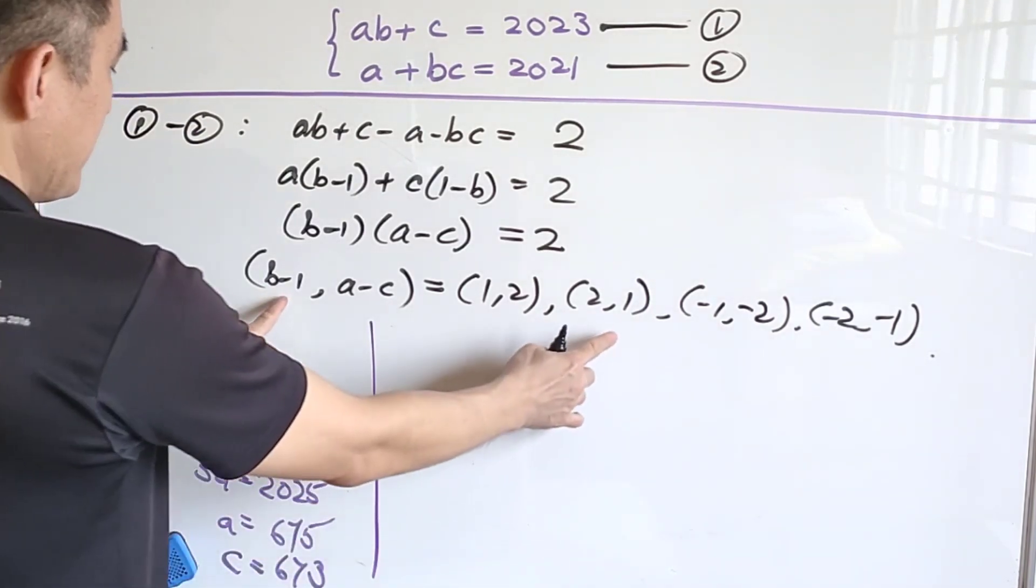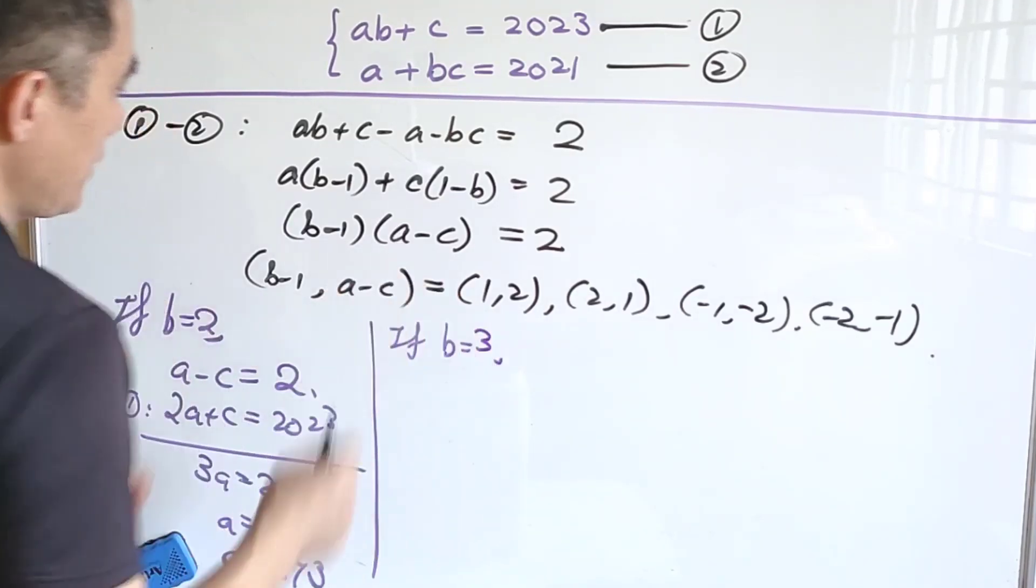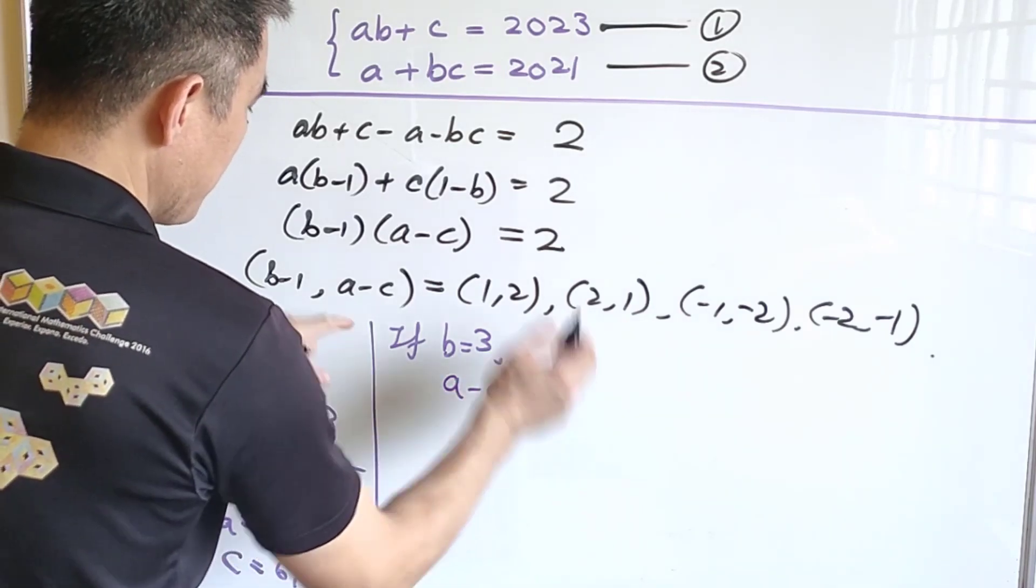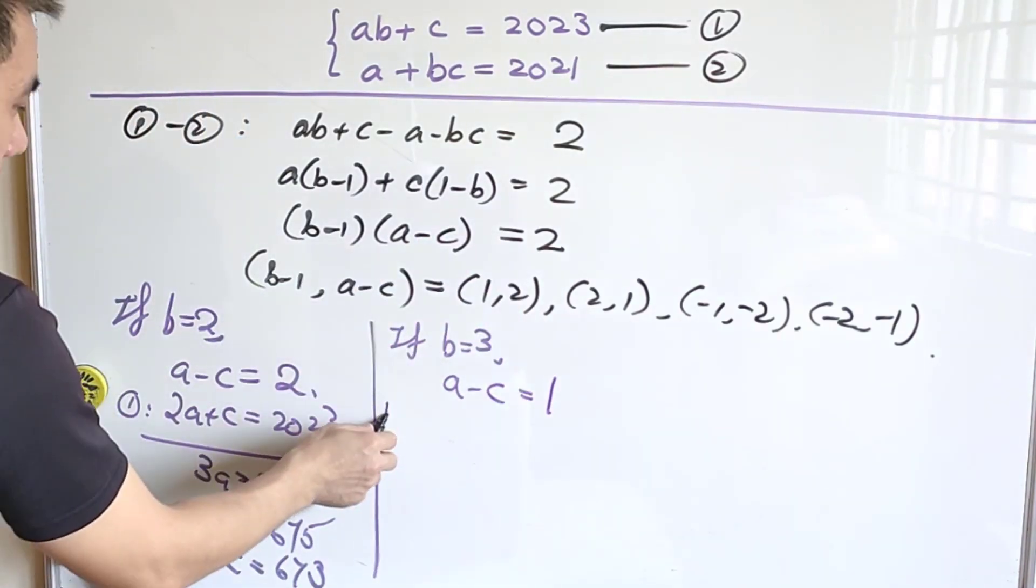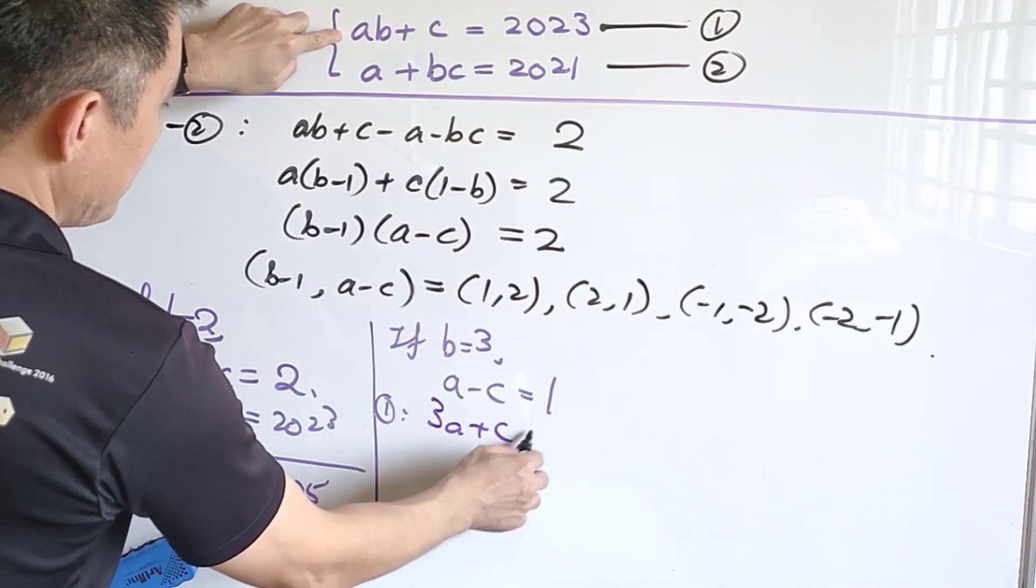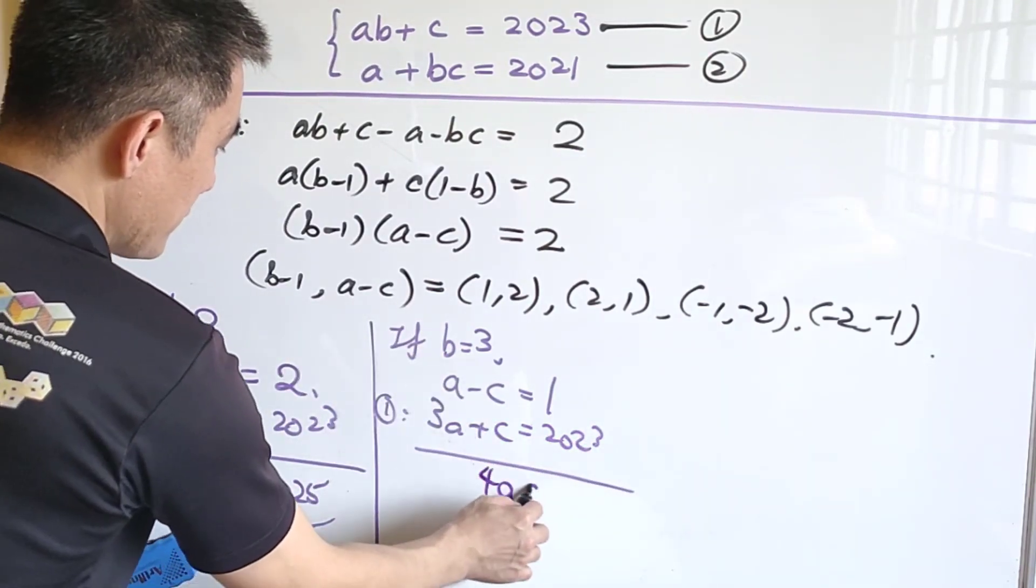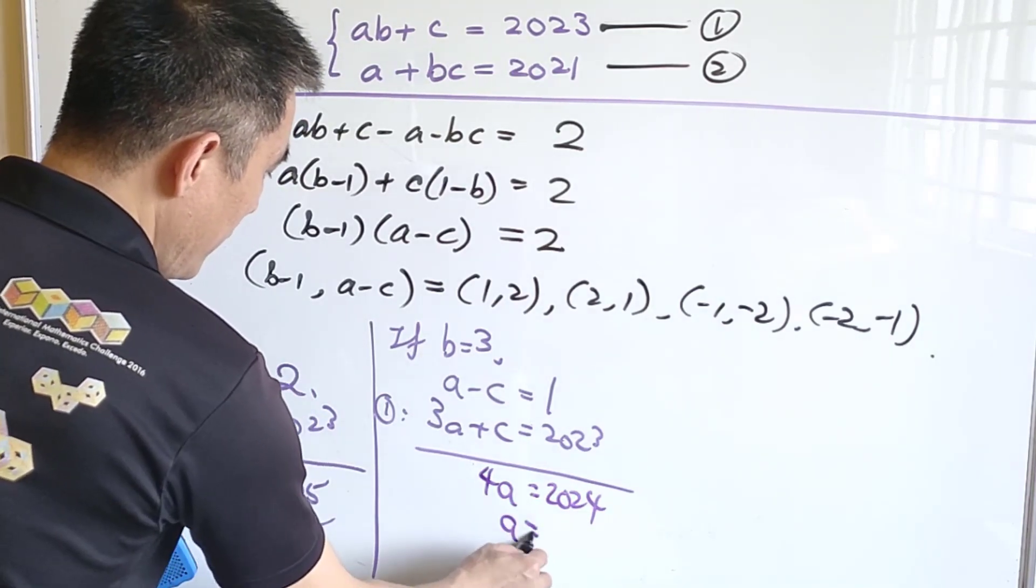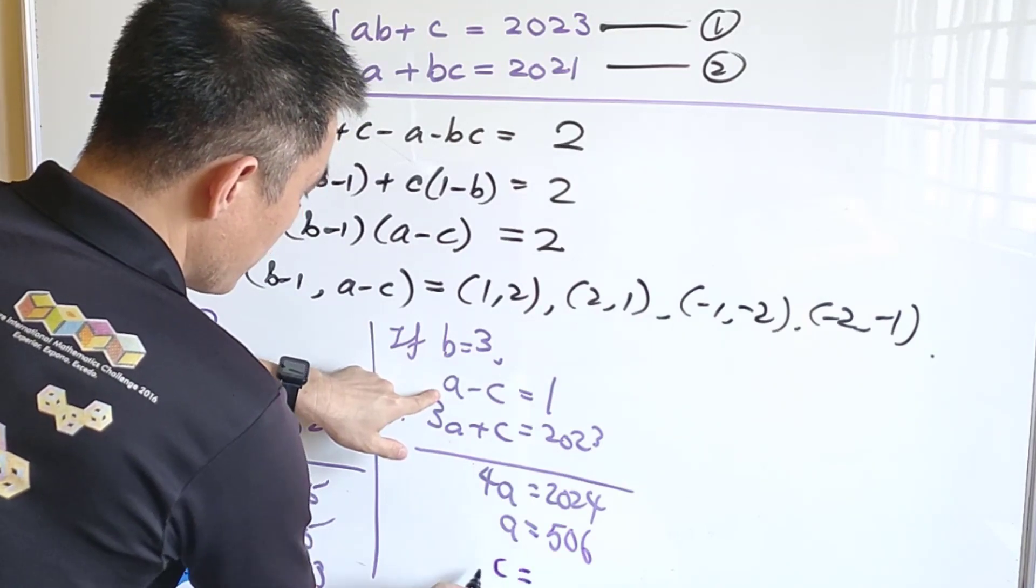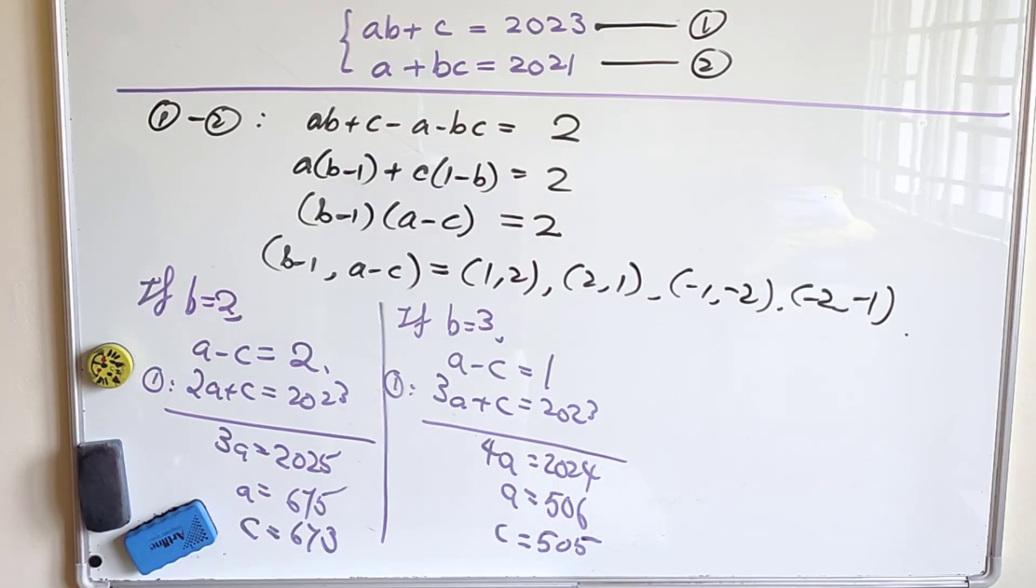How about the second case? If B is equal to 3, then A minus C is equal to 1. B equals to 3, again from equation 1, 3A plus C equals to 2023. When we add these two equations, 4A equals to 2024. Therefore, A equals to 506 and C is equal to 505. And this gives us another solution.